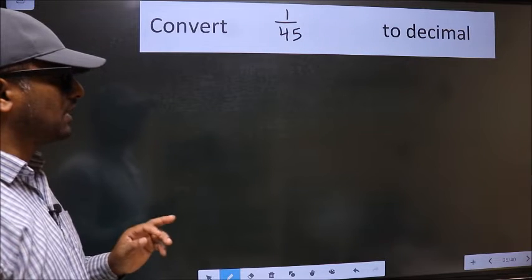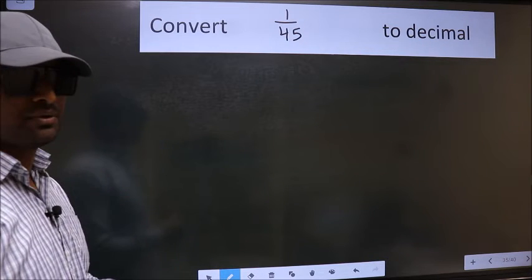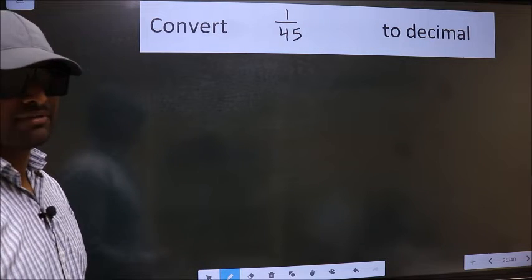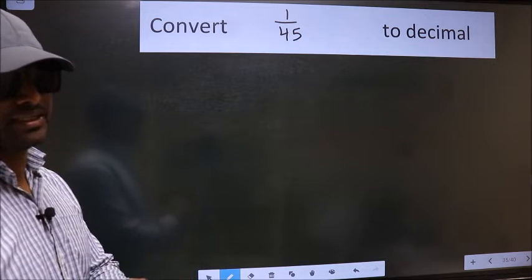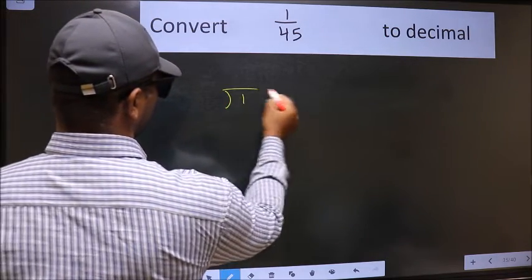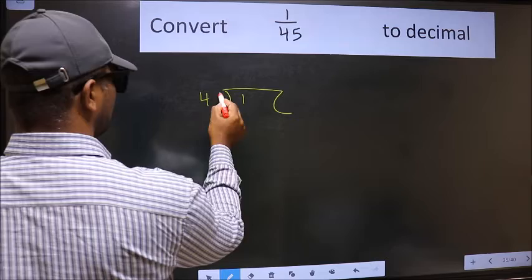Convert 1 by 45 to decimal. To convert to decimal we should divide, and to divide we should frame it in this way: 1 here, 45 here.